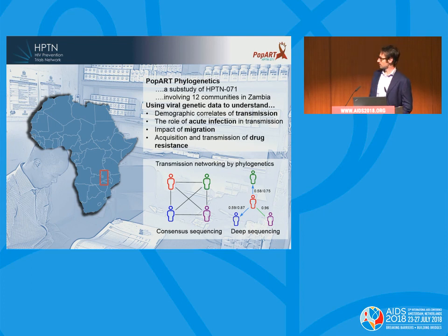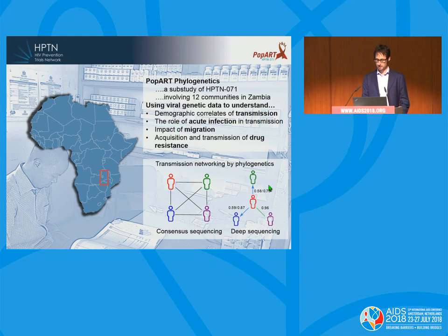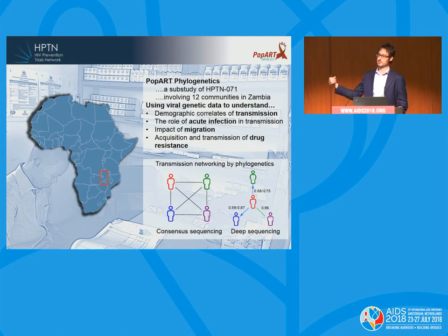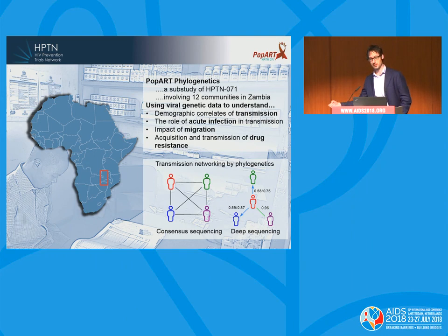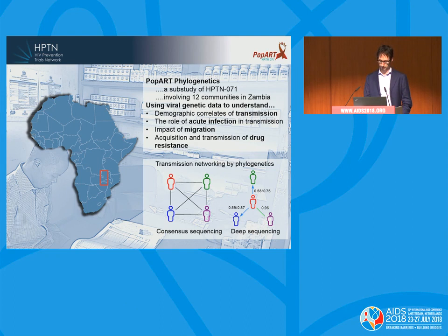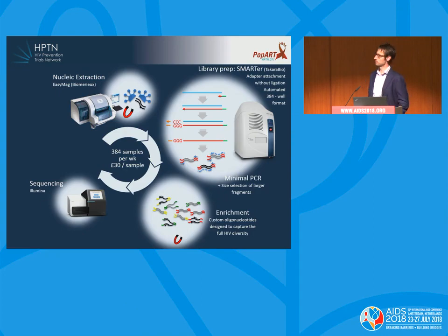With traditional Sanger-based sequencing, you can identify the links within the population. With deep sequencing, you can actually identify the direction of transmission and therefore the transmitters in the population, which is important because it allows you to identify the factors associated with transmission — the role of acute infection, migration, and drug resistance at the population level.